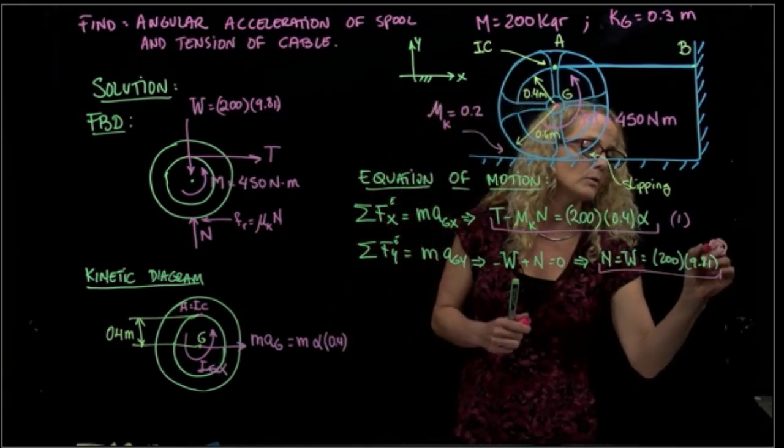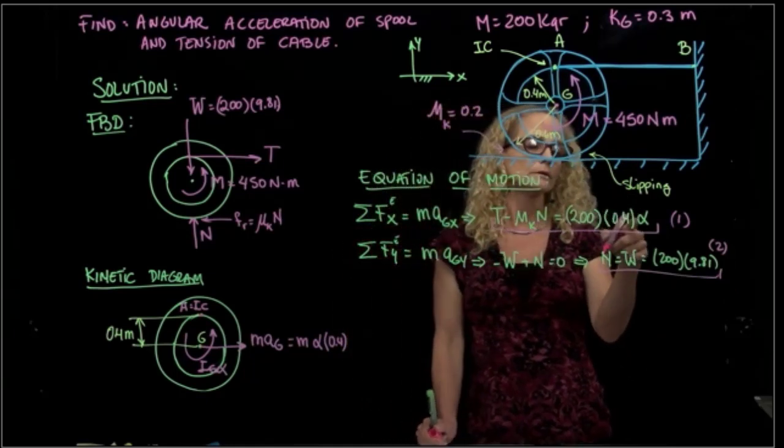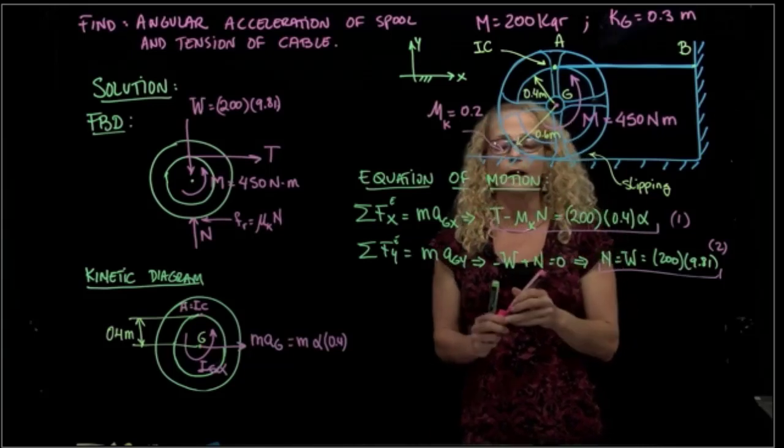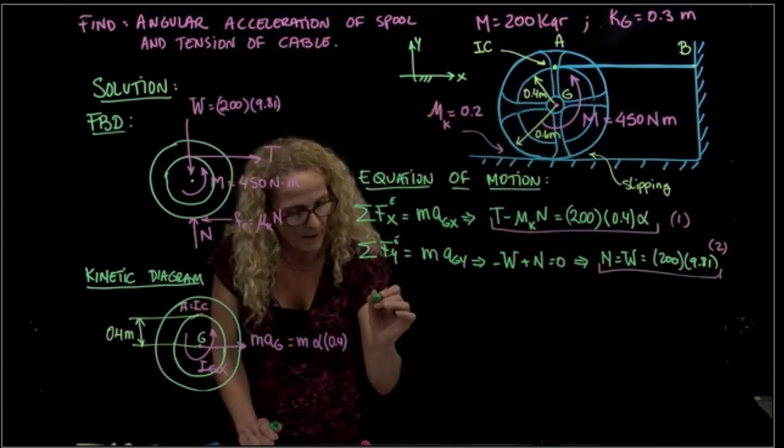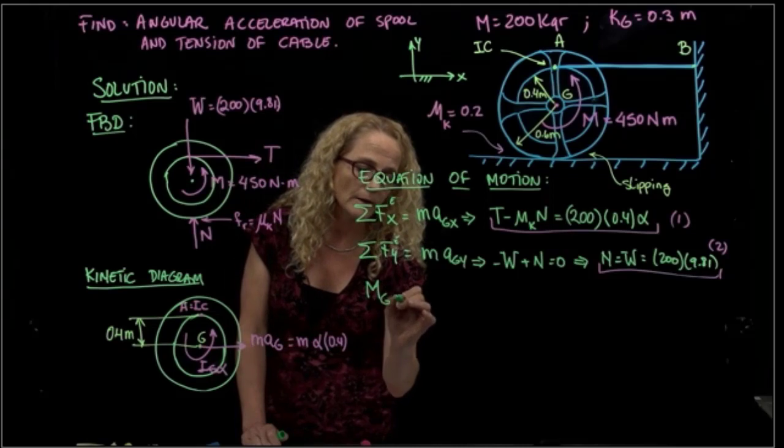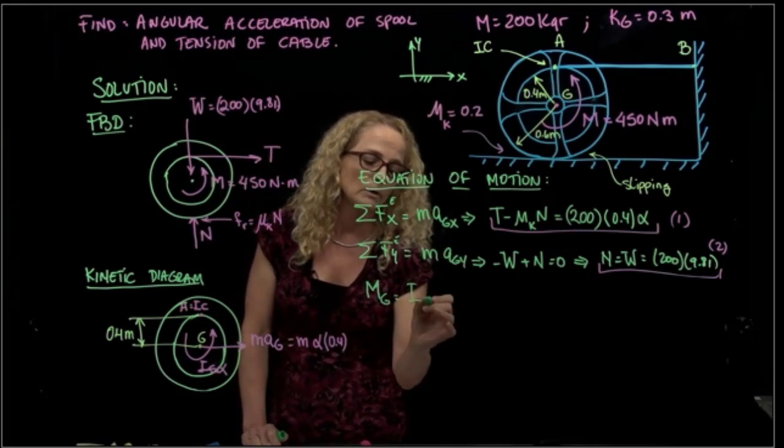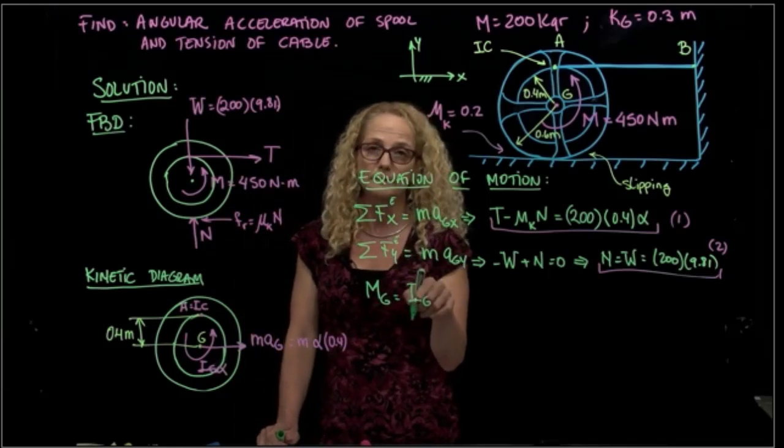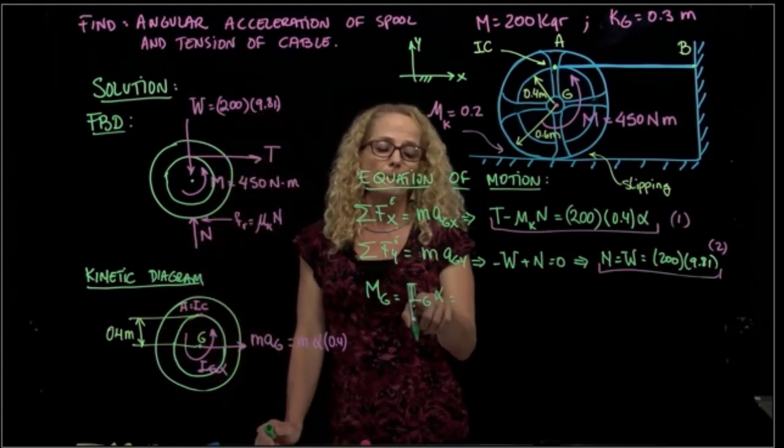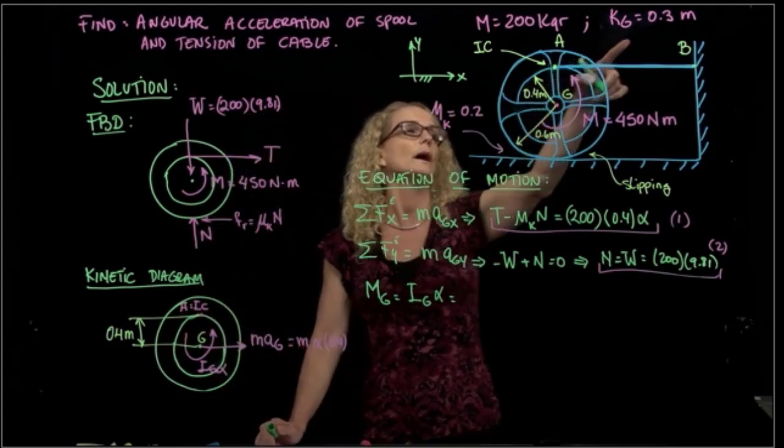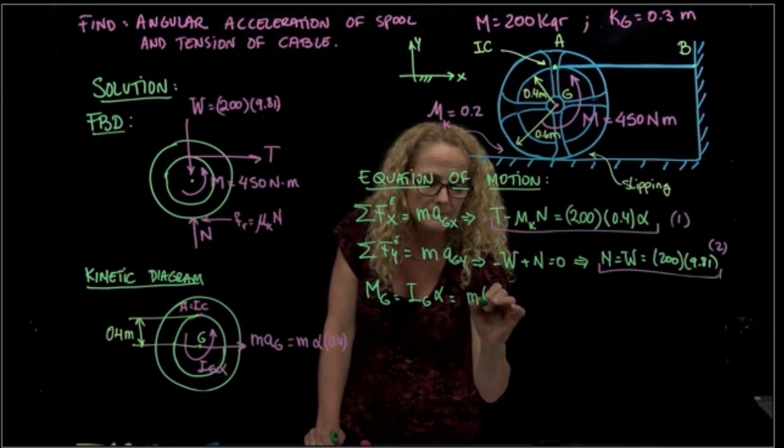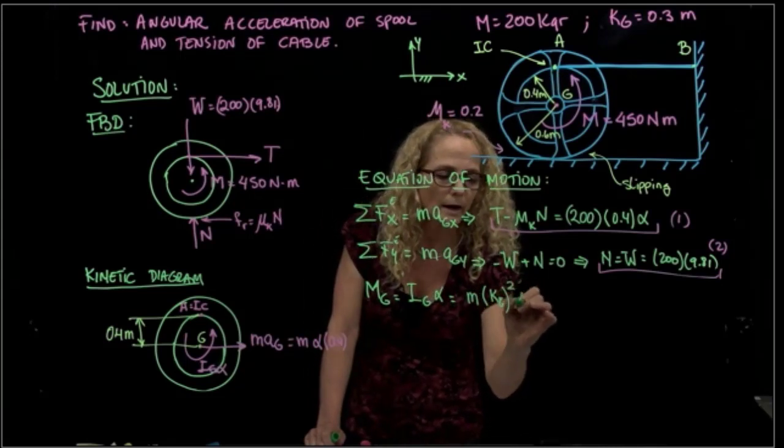I said here that you have three unknowns, the tension, the normal, and the angular acceleration, but we already found the normal. So we put the normal right here, and then we have only the tension and alpha. So I have to now take moment about, I will take moment about my center of gravity, which you recall will be the mass moment of inertia with respect to the center of gravity times alpha. And that, as you remember, the moment of inertia about the center of gravity, when we have the radius of gyration, will be the mass times this radius of gyration squared times alpha.